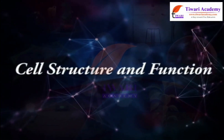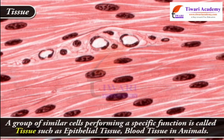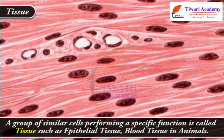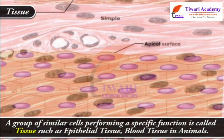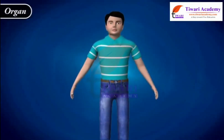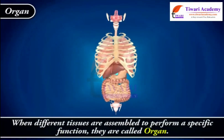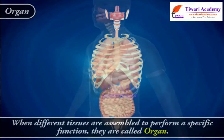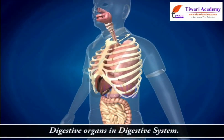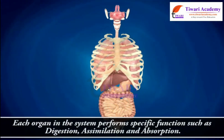A group of similar cells performing a specific function is called tissue, such as epithelial tissue and blood tissue in animals. When different tissues are assembled to perform a specific function, they are called an organ. For example, digestive organs in the digestive system — each organ in the system performs specific functions such as digestion, assimilation and absorption.